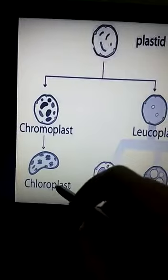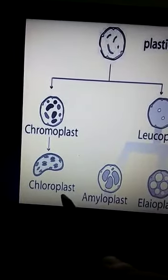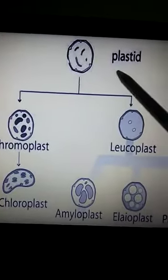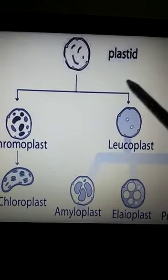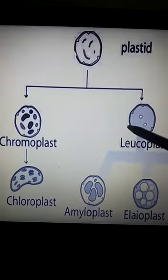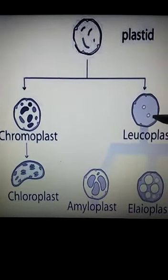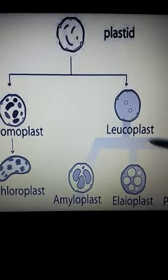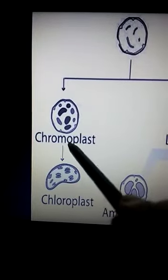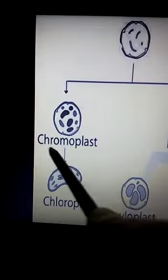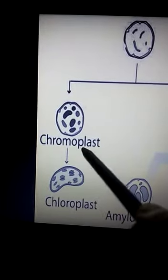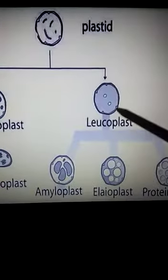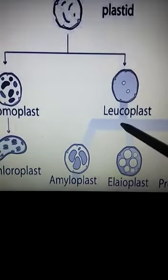The next organelle we are going to discuss is chloroplast, but before that we need to understand that chloroplast belongs to a family of cell organelles whose main name is plastids. These plastids are only present in plant cells. Plastids can be divided into two subtypes depending on whether they are colored or colorless. The colorless plastids are known as leukoplast, which are mainly utilized for storage. The colored plastids are known as chromoplast, and chloroplast is one type of chromoplast that we will discuss further.